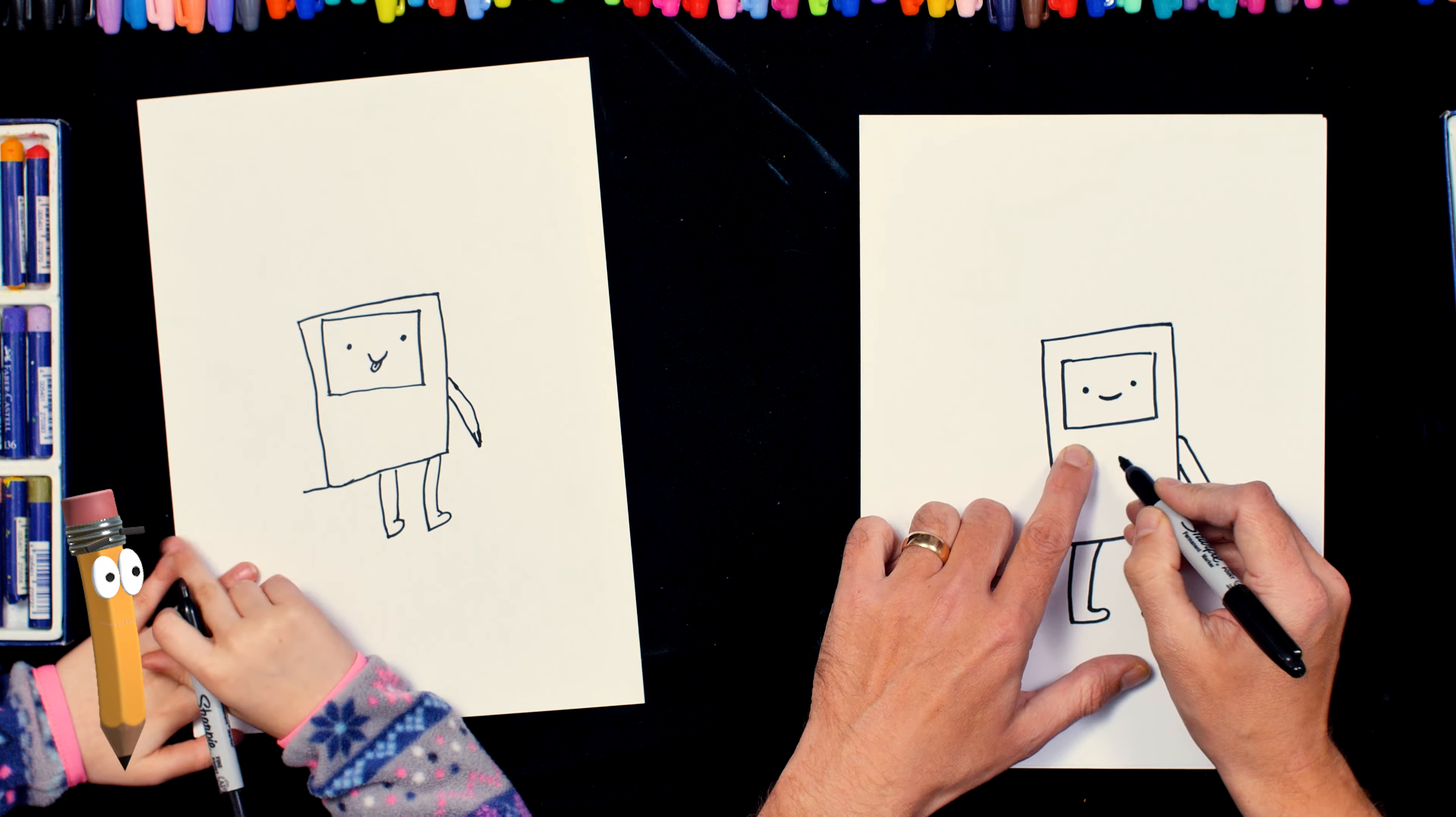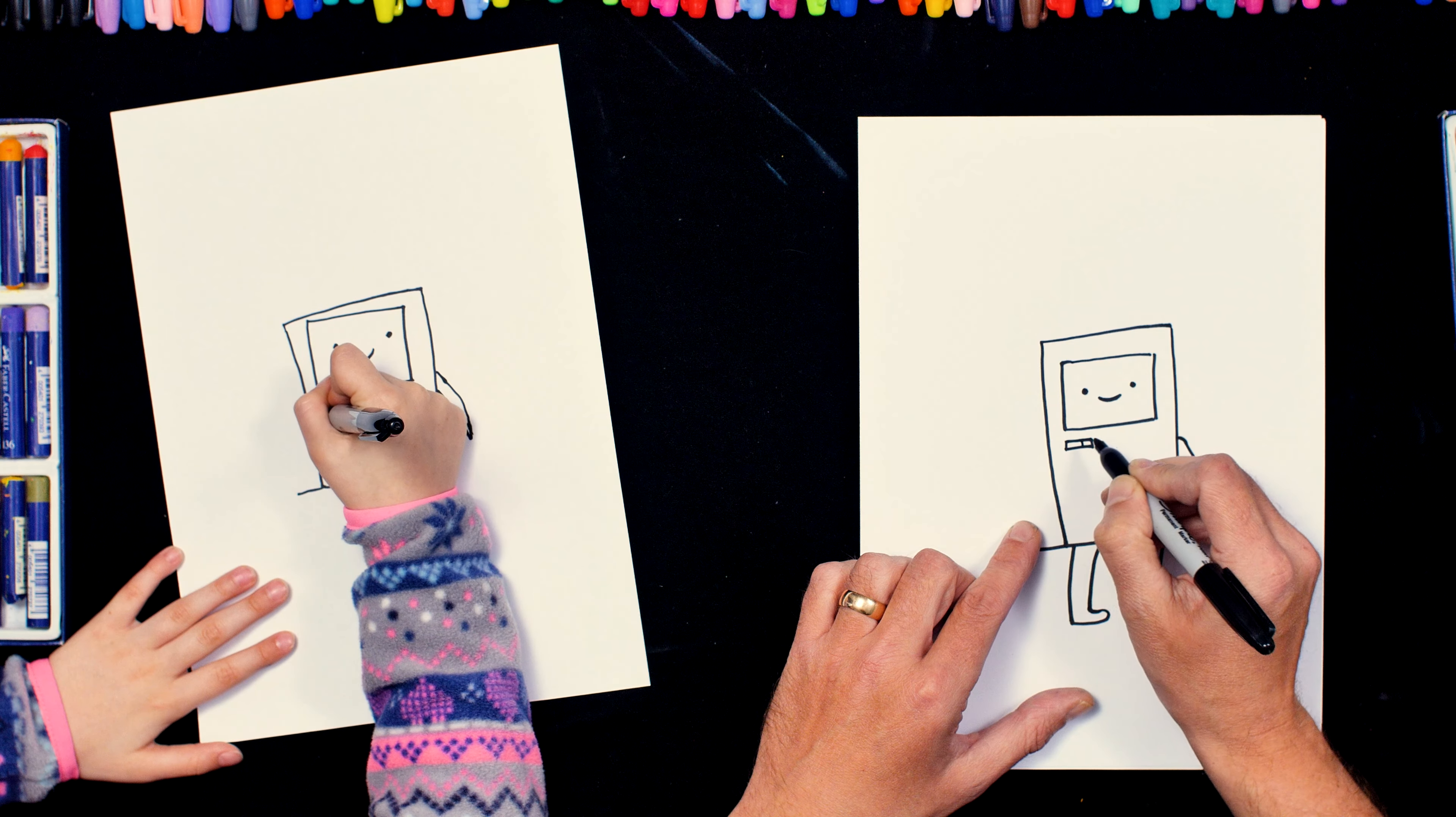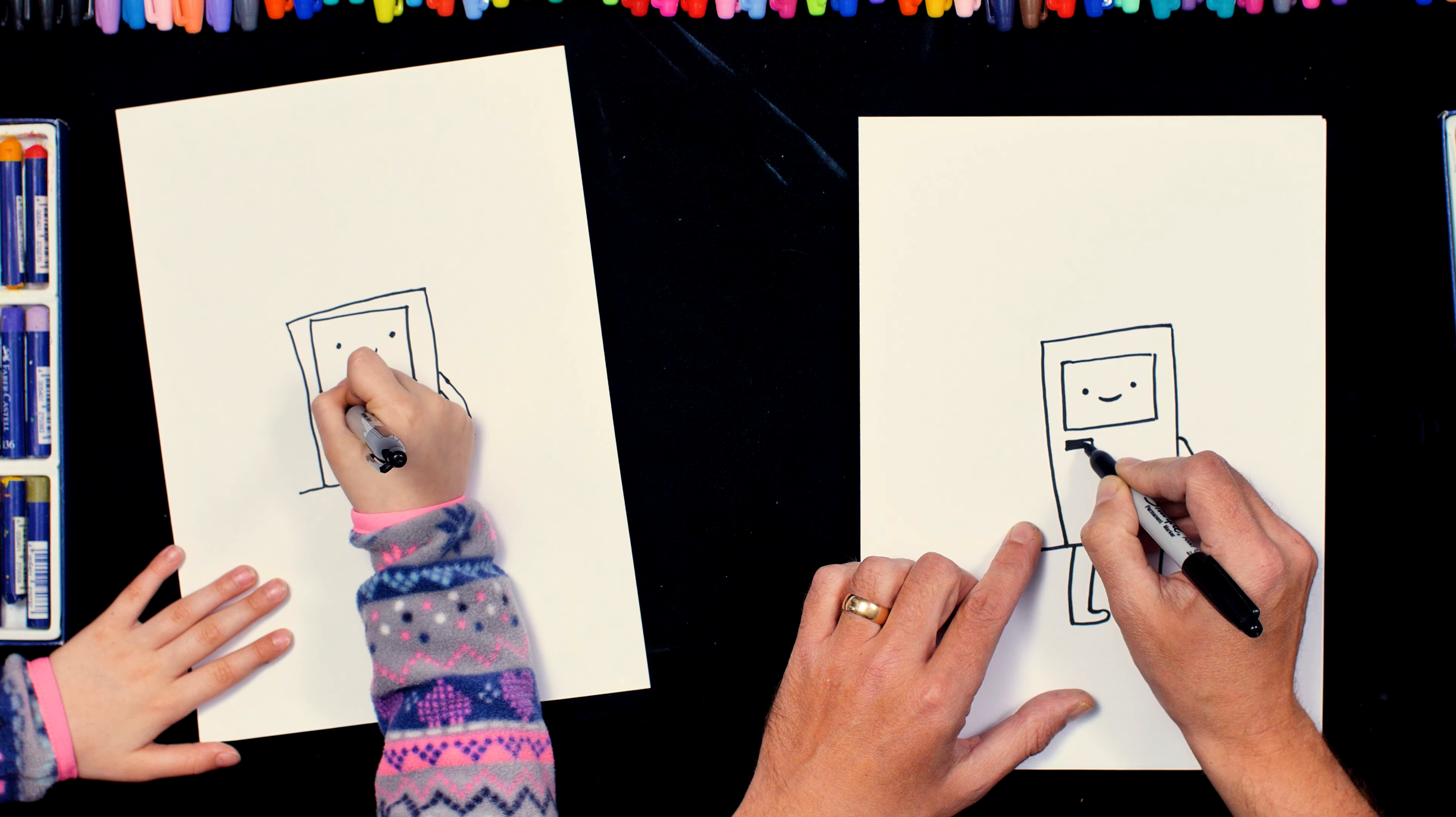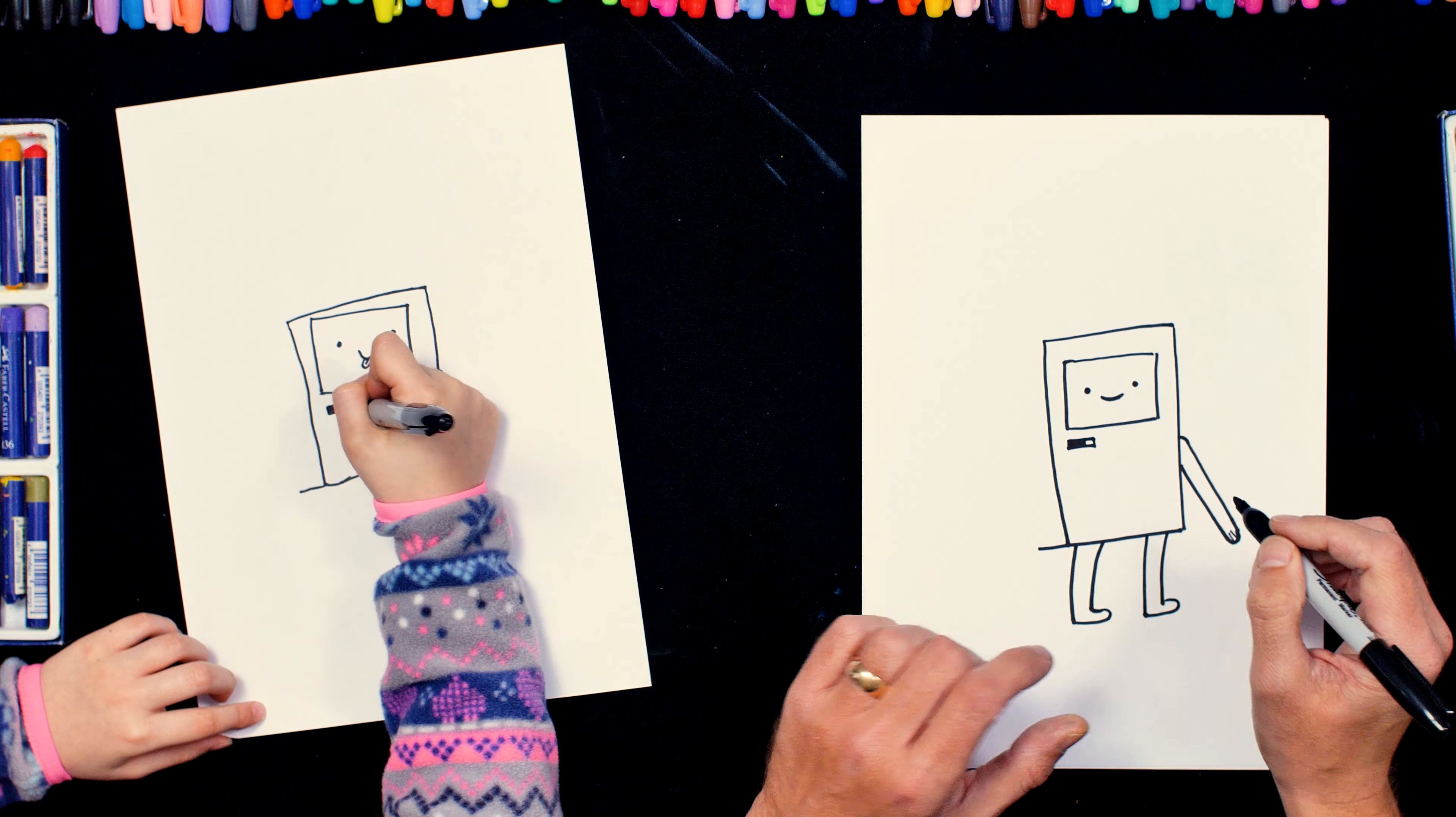Now just under his face, there's like a little rectangle. Does that mean minus? No, I think it's where he puts discs and things in. So we're just going to color half of it in like that. It's all right, don't worry. Can I do that? Yeah, that's perfect.